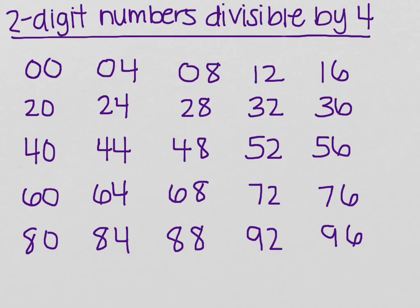Let's first look at this chart which tells us the two-digit numbers divisible by 4: 00, 04, 08, 12, 16, 20, 24, 28, 32, 36, 40, 44, 48, 52, 56, 60, 64, 68, 72, 76, 80, 84, 88, 92, 96. These would be good to know.